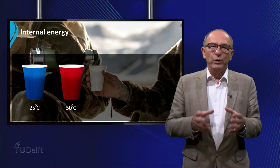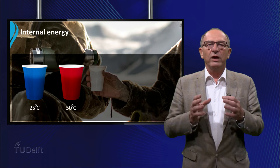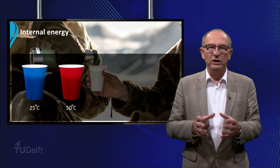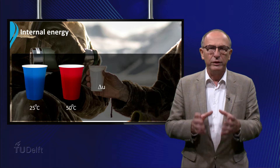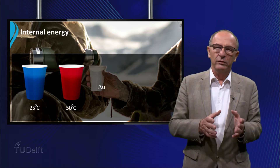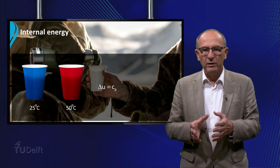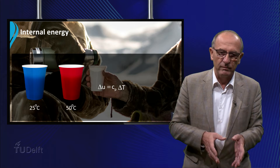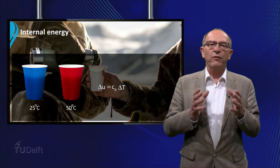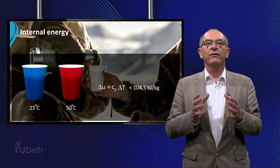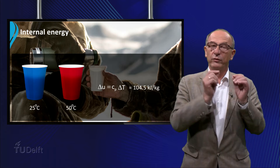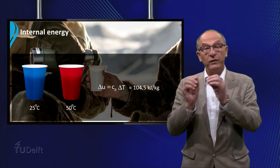From thermodynamics we know that for liquids in a constant volume, the change of the internal energy U per unit of mass can be written as the product of the heat capacity of the fluid and the temperature difference. So we have to add 104.5 kilojoules to heat up one kilogram of water from 25 to 50 degrees.